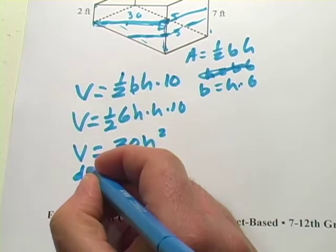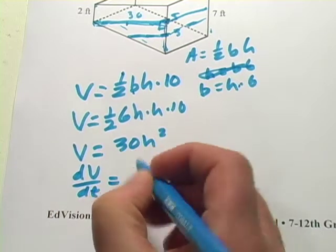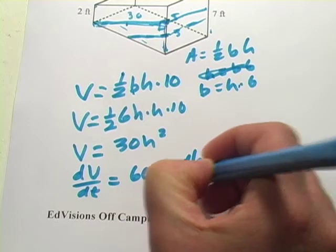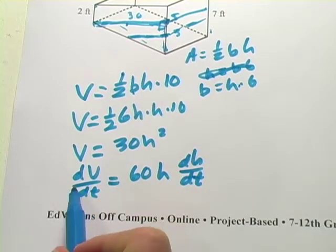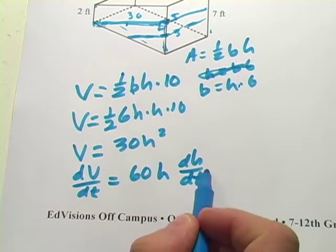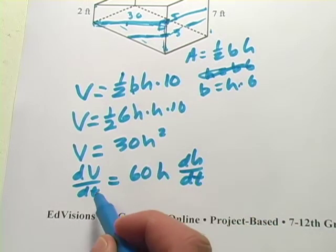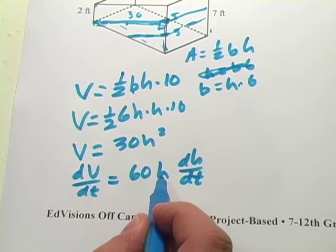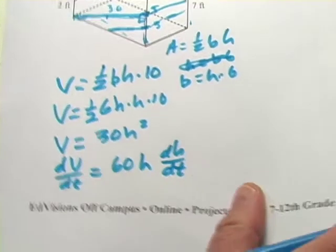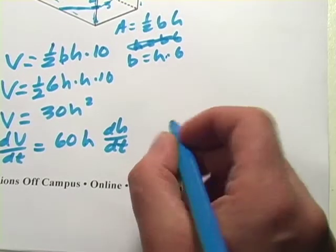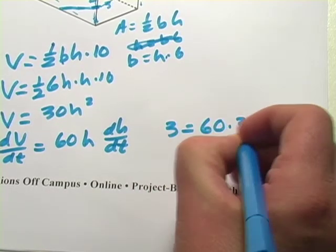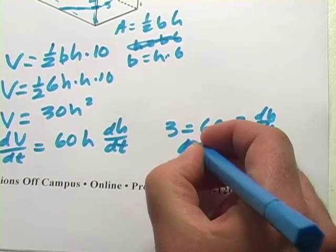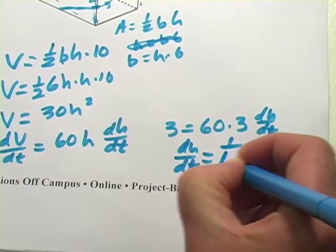So with respect to time, we get dv dt equals 60 H dh dt. Here, this is the rate that the pool is being filled. We know that's three. This is the rate that the height is changing. And that's what we want to find out. So all we have to do is plug in three here. And they're asking for the moment when it's three feet off the deep end. So height is three there. So let's plug both those values in. So we have three equals 60 times three dh dt. And you do the math on this. And what you find is that dh dt is 1/60th.